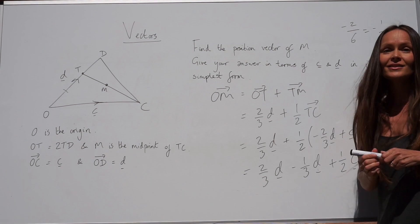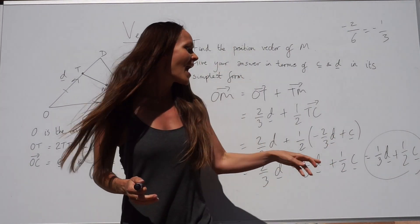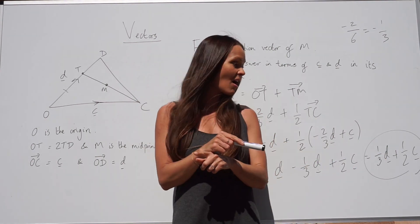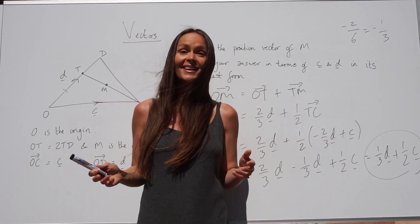So there's the answer. A third D plus a half C. And it doesn't matter whether you write it like that or the other way around. A half C plus a third D is exactly the same thing.